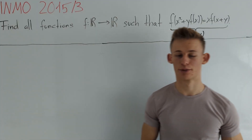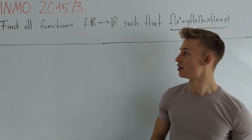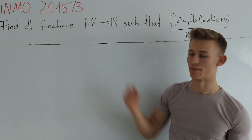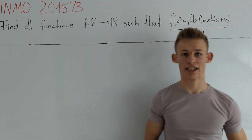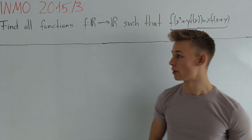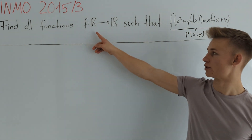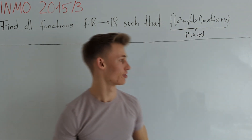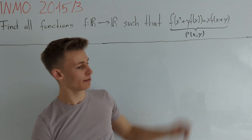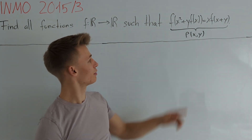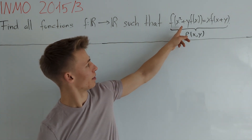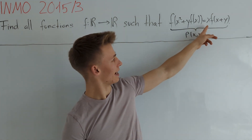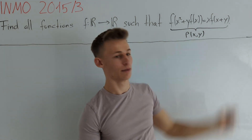Hey guys, today I want to present a solution to the India National Math Olympiad 2015 Problem 3. Let's have a look at the problem statement. We are asked to find all functions from the real numbers to the real numbers such that the assertion p, which is equal to f, holds.